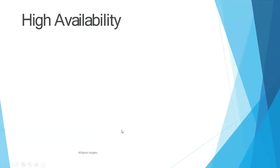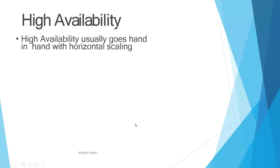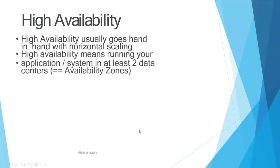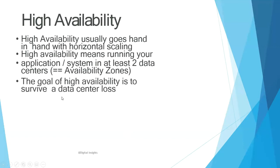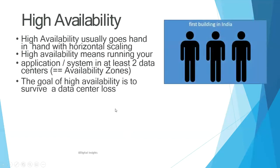Now what is high availability? High availability usually goes hand in hand with horizontal scaling. High availability basically means running your application system in at least two data centers, like AZs. You can have two EC2 instances running on different AZs so that there is availability of the application even if one data center goes down. The goal of high availability is to survive a data center loss.